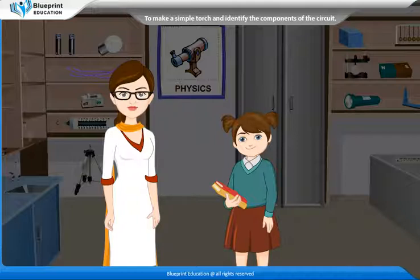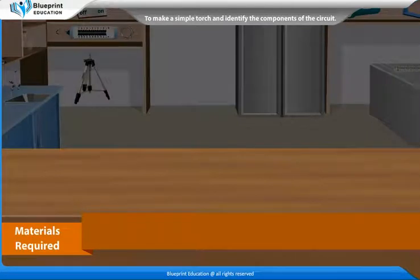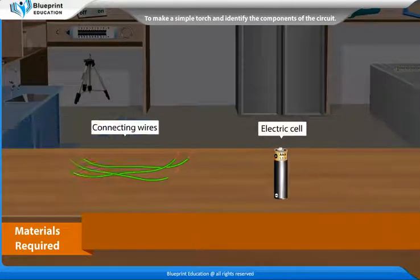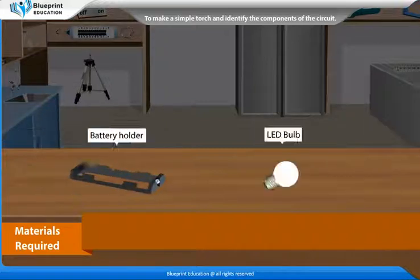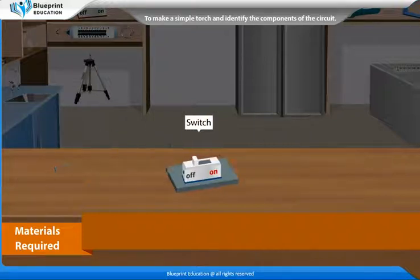Let's perform an experiment to make a simple torch and identify the components of the circuit. The materials required are: connecting wires, an electric cell, a battery holder, an LED bulb, and a switch.